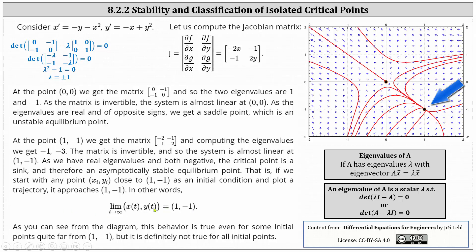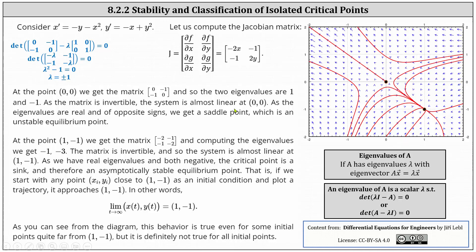As we can see from the diagram and some of the trajectories, this behavior is true even for some initial points quite far away from the critical point (1, −1), but it is definitely not true for all initial points. Analyzing the phase portrait, if we focus on the critical point (0, 0), notice some of the vectors are pointing in toward (0, 0) and some are pointing out away from (0, 0), which verifies we have a saddle point. And if we focus on the critical point (1, −1), notice all the vectors are pointing toward (1, −1), which verifies we have a sink. I hope you found this helpful.